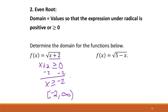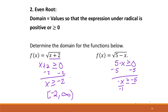We can do the same thing for the second one. We let 5 minus x be greater than or equal to 0, subtract 5 from both sides to get negative x is greater than or equal to negative 5, then divide both sides by negative 1. Remember: when you divide or multiply by a negative in an inequality, you have to flip the sign. So we get x is less than or equal to positive 5. We write that as negative infinity to 5 with a bracket, since 5 is included.